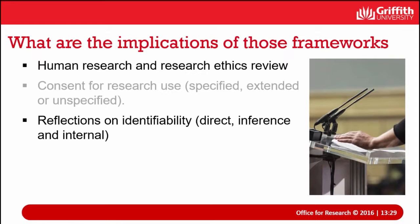You need to think about the degree to which information is identifiable — is it directly identified in terms of individuals? Is it possible that individuals could be identified by inference? Within social science research, there's increasingly reflection on what we call internal identification. So if, for instance, you were talking about a group of research ethics bureaucrats and you said you spoke to a bureaucrat that gets around in a wheelchair, is in his 40s and is losing his hair — you may not have said their name, but people that work in the sphere will know who you're talking about. Sometimes that internal identification can be more problematic than a general population identification.